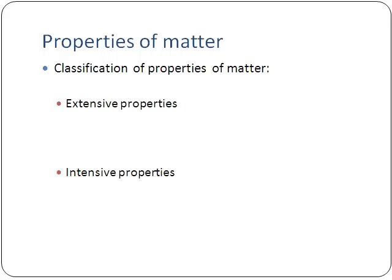The first topic is the classification of properties of matter. Whenever we're describing any physical thing, anything that's matter, we usually describe it by its properties — what color is it, how much does it weigh, what's its density, things along those lines. We can break down properties of matter into one of two types: extensive properties or intensive properties.